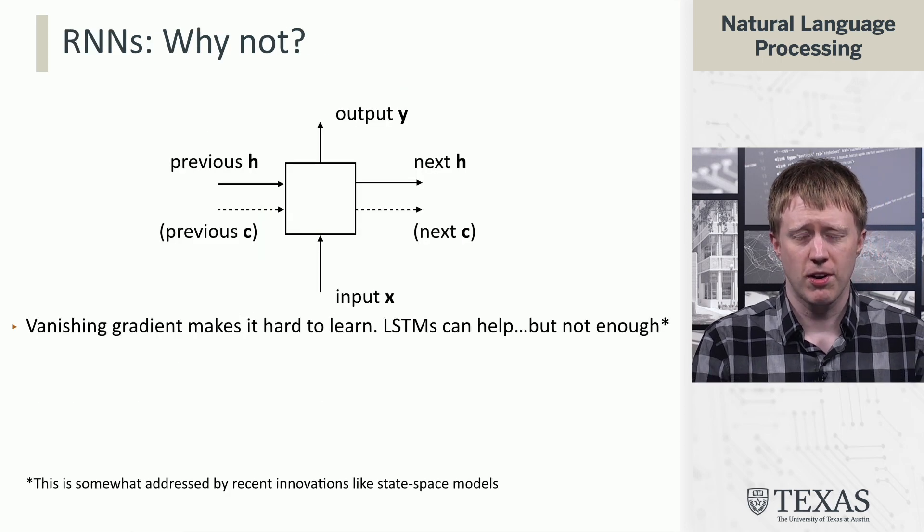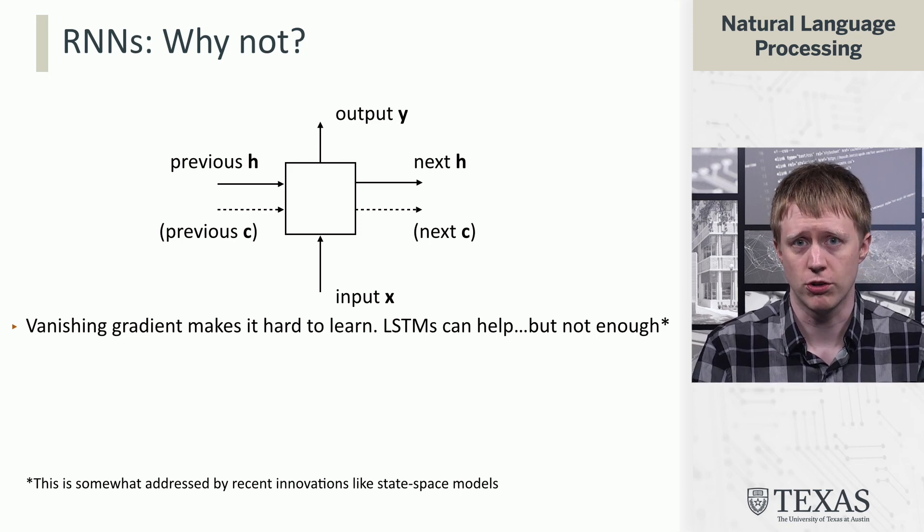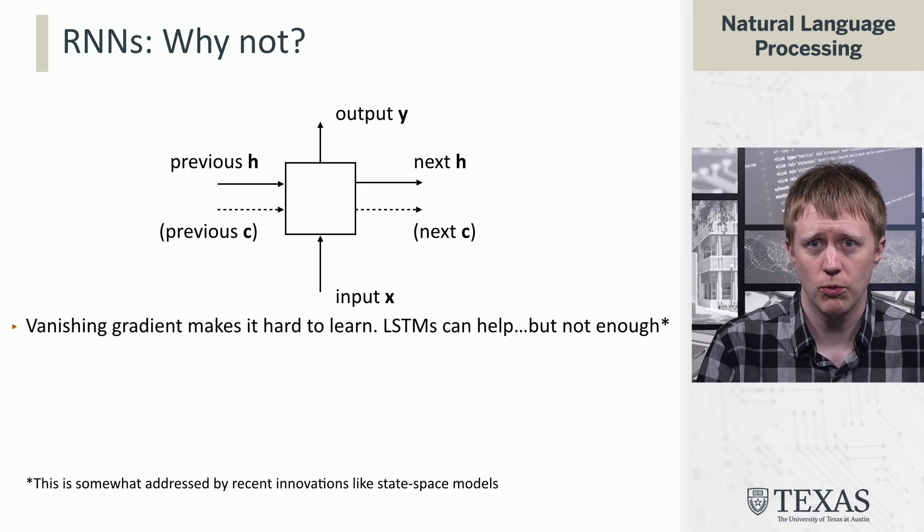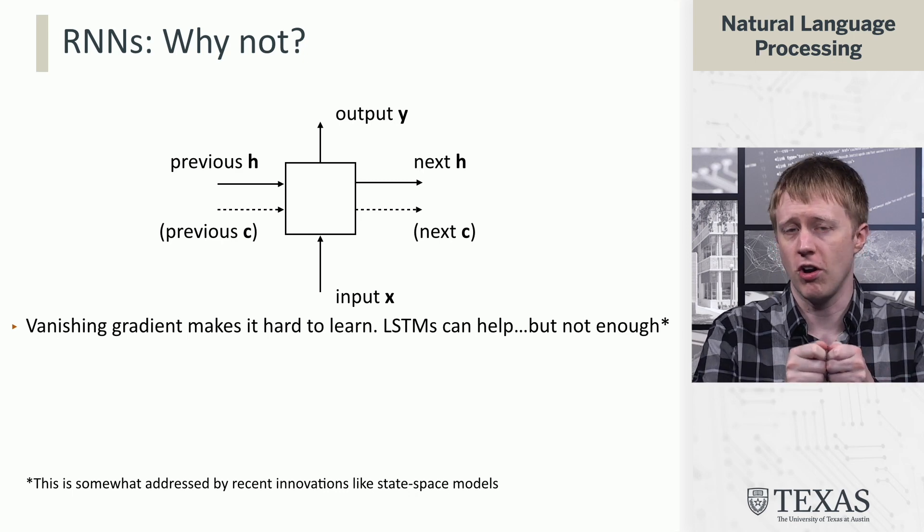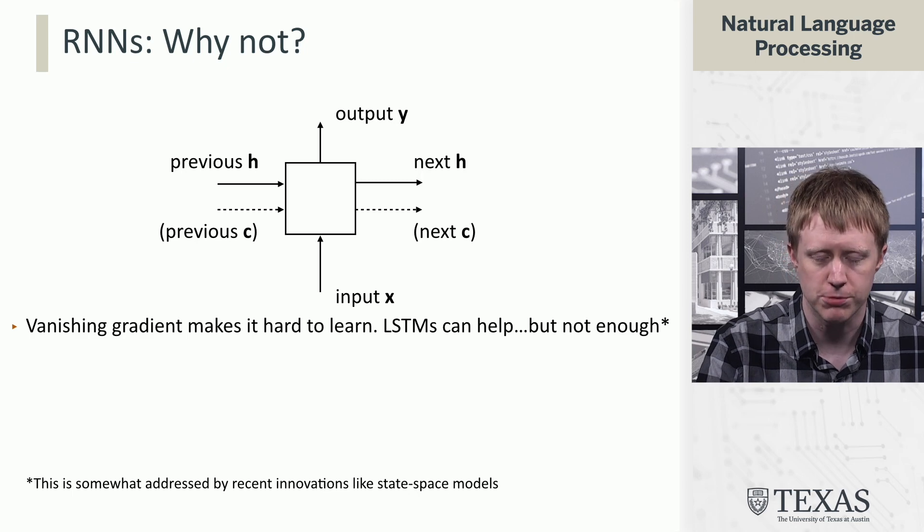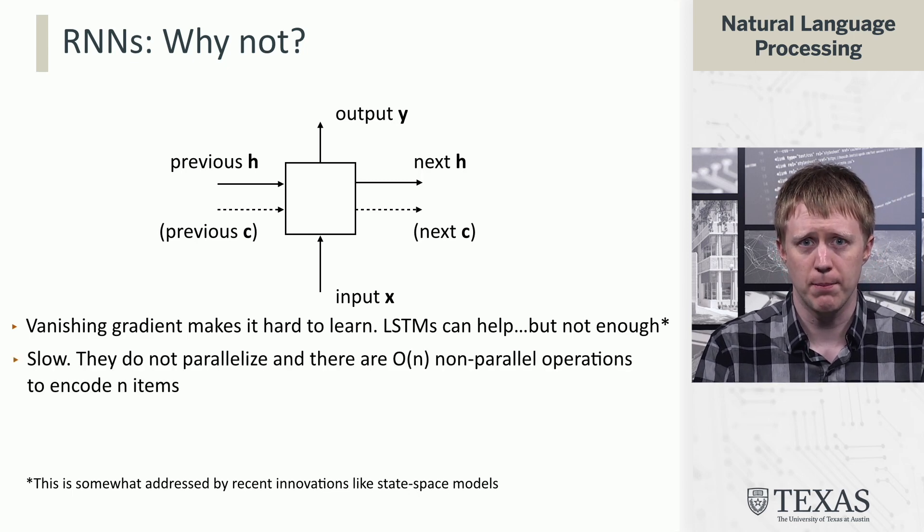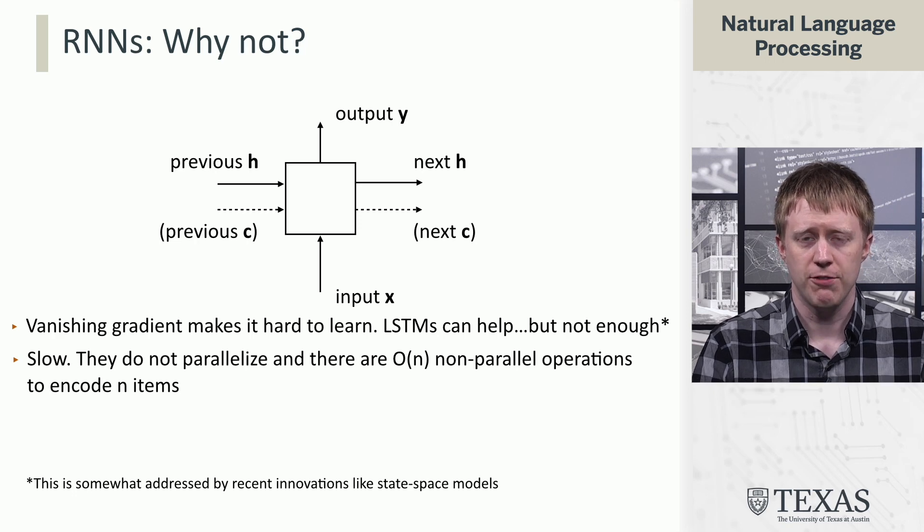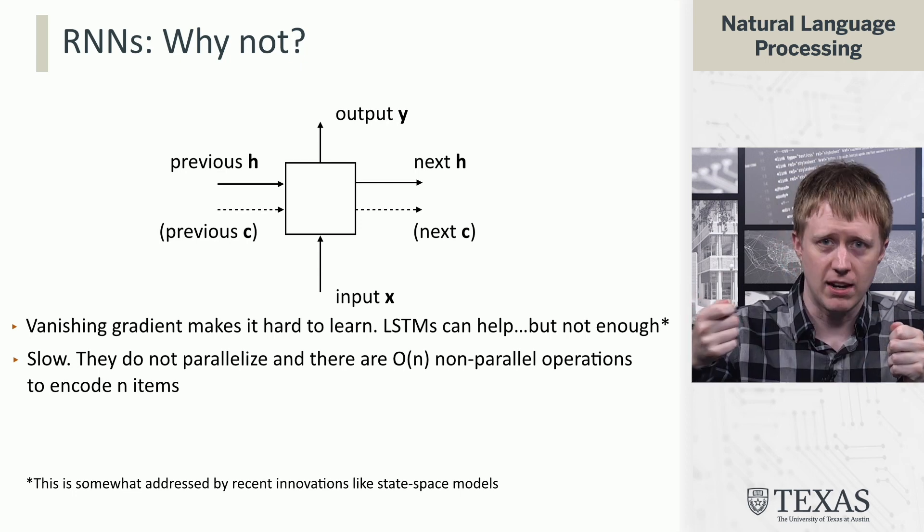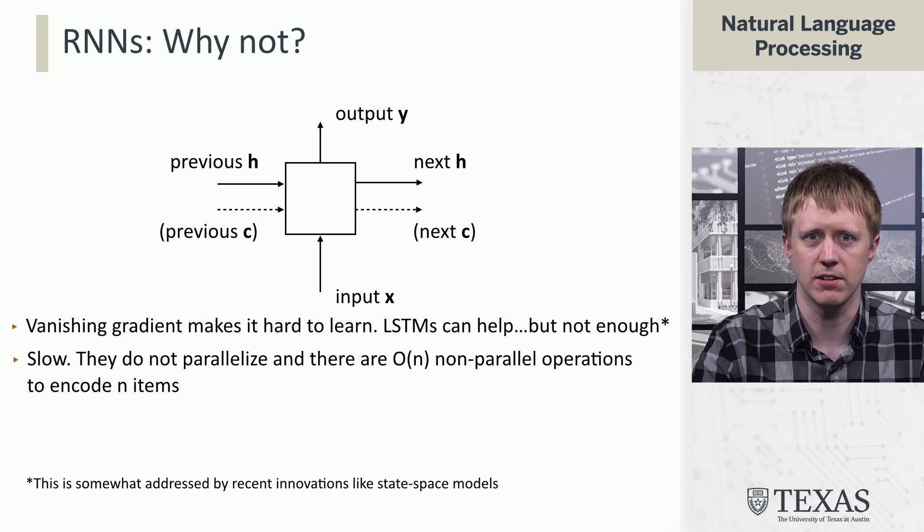This was part of the observation that led to the development of architectures like long short-term memory networks that do better at this. But they really don't help enough. It's still hard to learn over, say, thousand-word time scales of information for things like language modeling. And RNNs are also slow in a bad way, which is they don't parallelize well. If you're going to encode a sequence, you have to fundamentally go through order n steps that don't parallelize because you have to read each word in and update the hidden state accordingly.